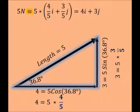Write this out in this equation. So we're taking the 5 side, we're multiplying it by 4 5ths and 3 5ths to get the i and j components.